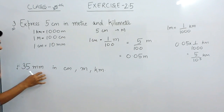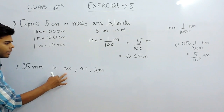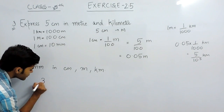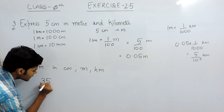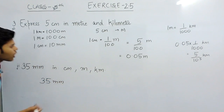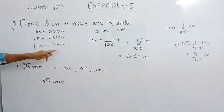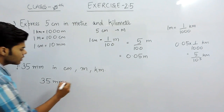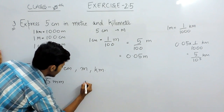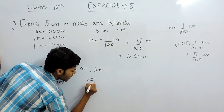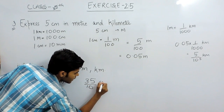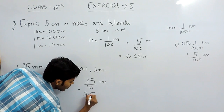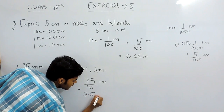Now we have to convert this millimeter in centimeter, meter, and kilometer. So now this is 35mm. To convert it in centimeter we can see that 1 millimeter will be equal to 1 upon 10 centimeter. So in centimeter it will be 35 upon 10 centimeter, that will be equal to 3.5 centimeter.